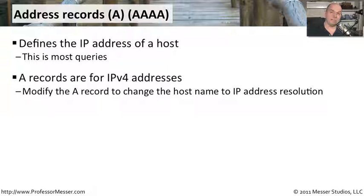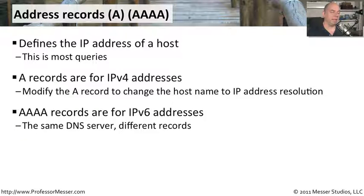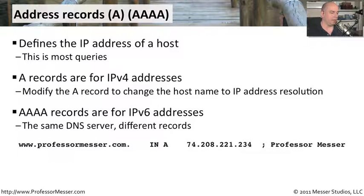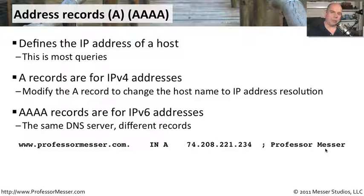But if we have an IPv6 device and would like to get the IPv6 address of that server, then we would need to find the AAAA record for that device. Those are for IP version 6 addresses. That way, we can use the same DNS servers for both IPv4 and IPv6 — we're just specifying different record types for each one. For example, ProfessorMesser.com has an A record of 74.208.221.234. You can see there's a semicolon so you can put some text along that line so that later on, if you go back to your DNS server, you can see that's the ProfessorMesser website.